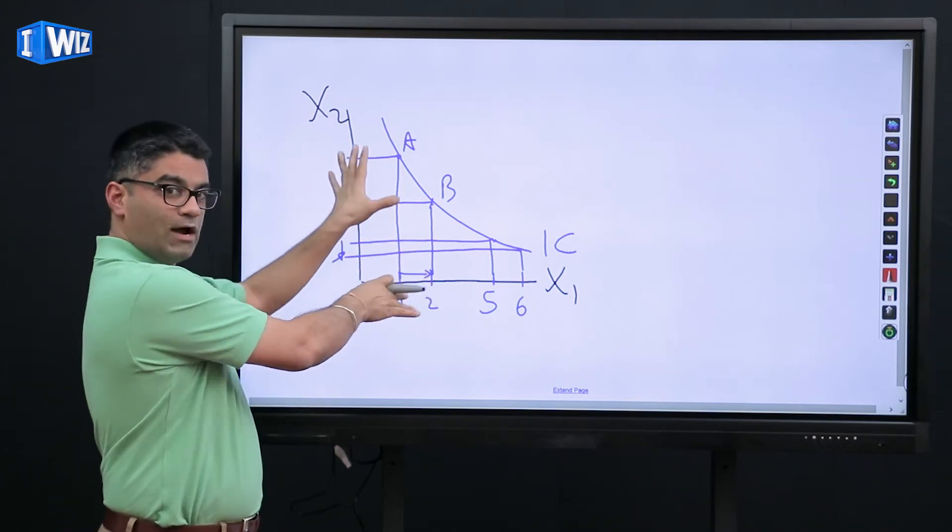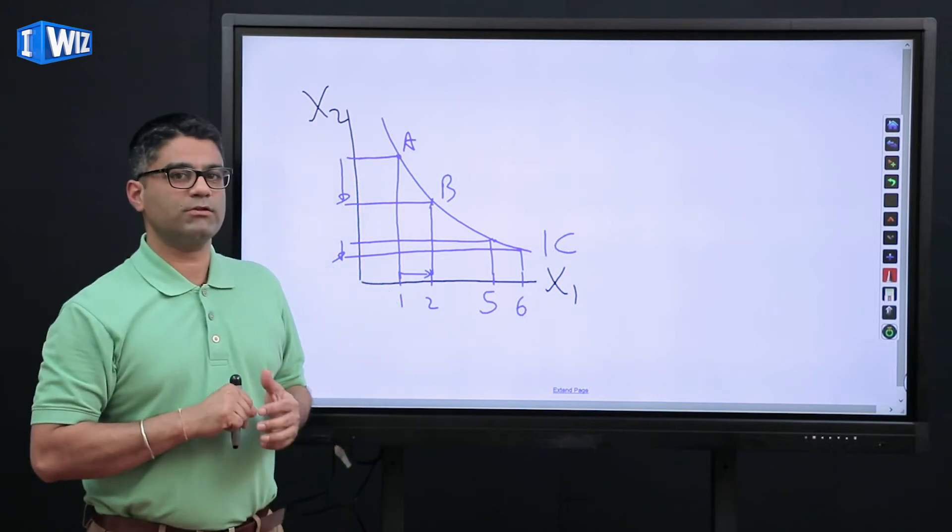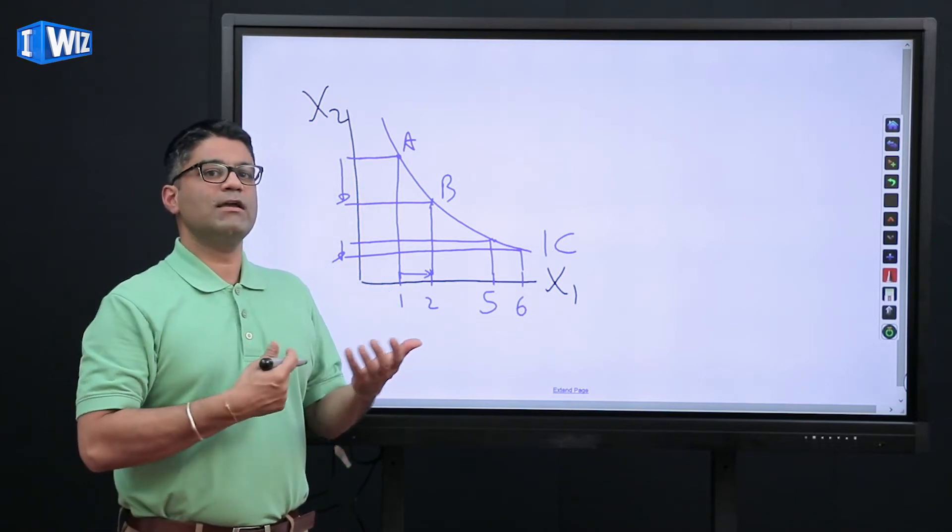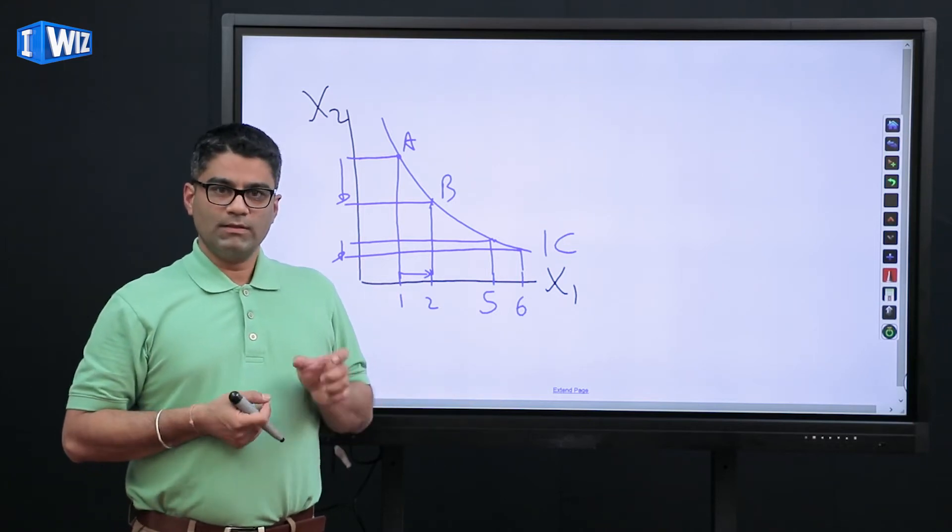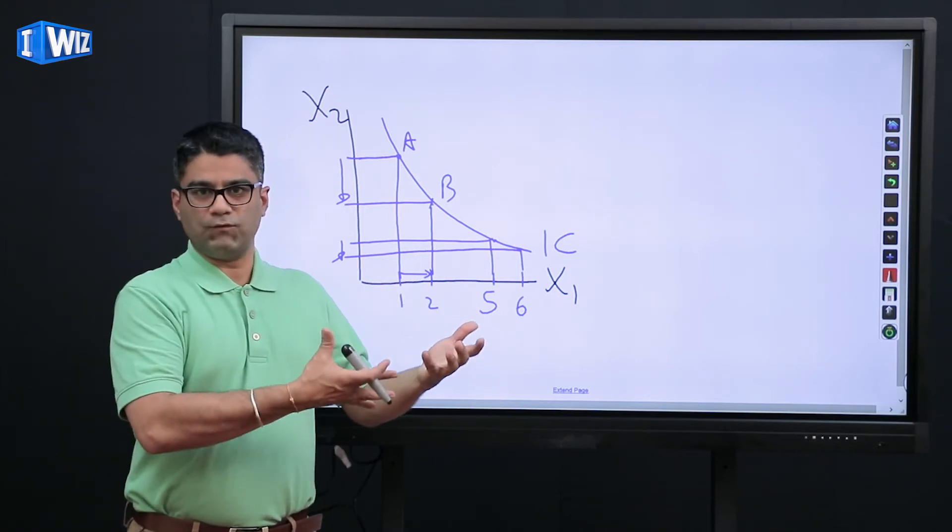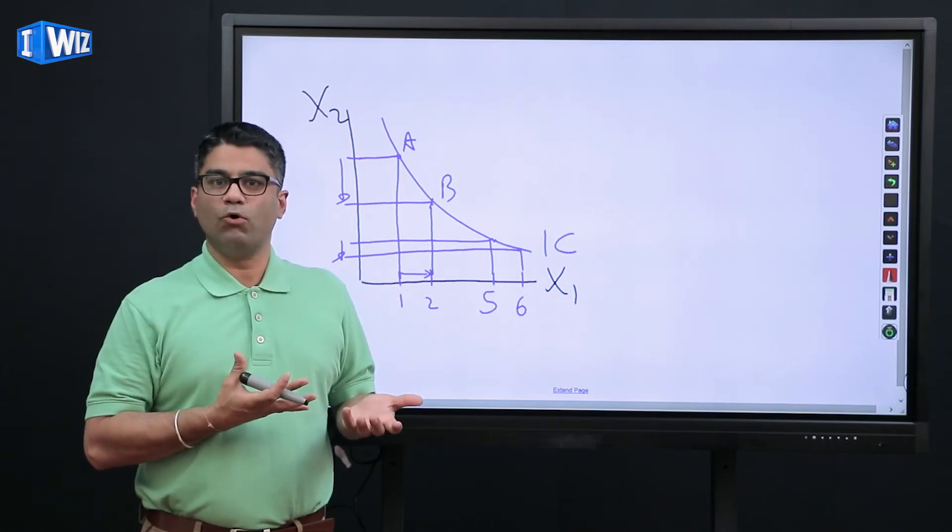Let me pick another two points. If I want to go from 5 to 6 units of x1, now the amount of x2 that I'm willing to give up becomes smaller. So just understand that graphically, how that's true. Now let me explain to you theoretically why that's true. Again, I'm going to go back to the example of water and food. If I give you, when you're eating a meal and I give you 5 glasses of water and 0 units of food,